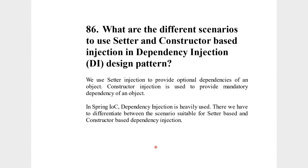What are the different scenarios to use setter versus constructor-based injection in the dependency injection design pattern? With dependency injection, you inject the dependencies without having to instantiate the class yourself — you create a private instance and use auto-wiring. When your parent class is loaded, it initializes the dependency. When you use setter injection, you provide an optional dependency — you only want a particular method when you need it. When you use constructor injection, you create everything present in the constructor.